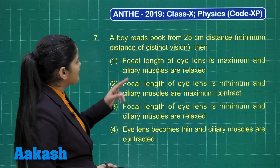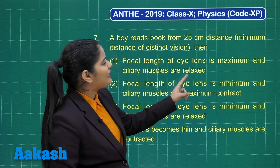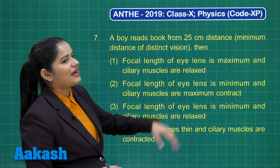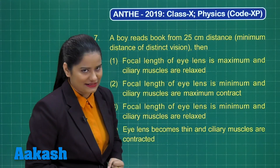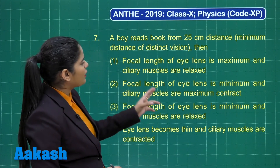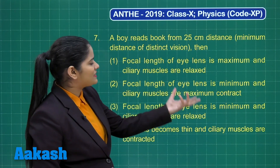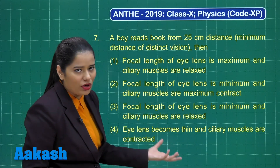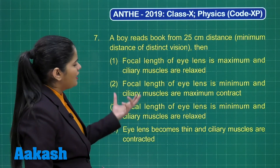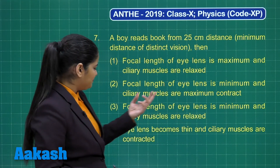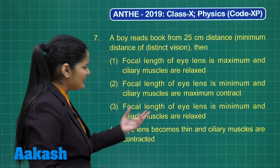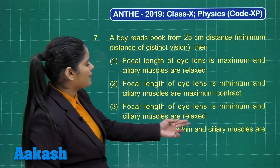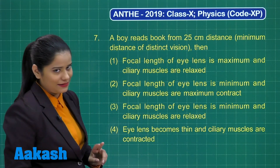The first option says focal length of eye is maximum and ciliary muscles are relaxed. Option 2 says focal length of eye is minimum and ciliary muscles are maximum contracted. Option 3 says focal length of eye is minimum and ciliary muscles are relaxed, while option 4 says eye lens becomes thin and ciliary muscles are contracted.